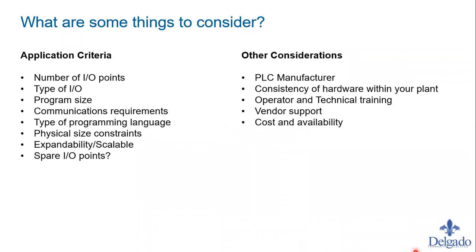What are the criteria to consider? You have to know the number of I/O points in your system. You have to get a drawing, have someone tell you, or physically count — knowing how many analog or discrete push buttons, switches, and transmitters are out there so you can get a complete count of what you have to wire in your PLC. The type of I/O — discrete or analog — makes a difference. The program size is also a factor; the number of I/O points often helps determine the program size.